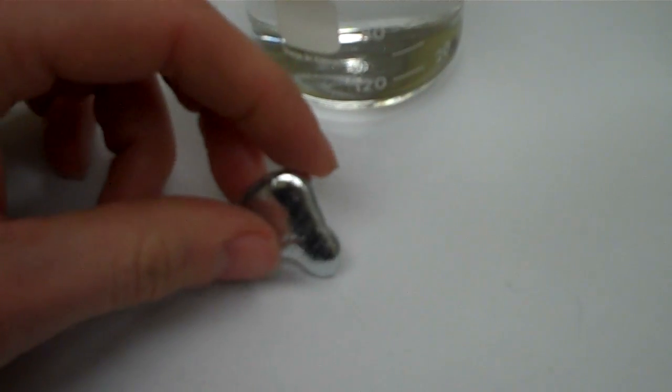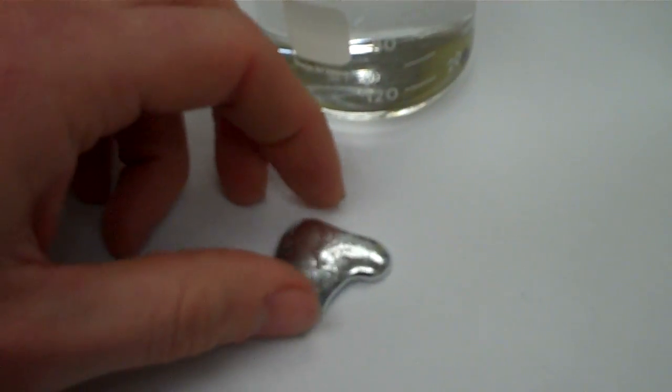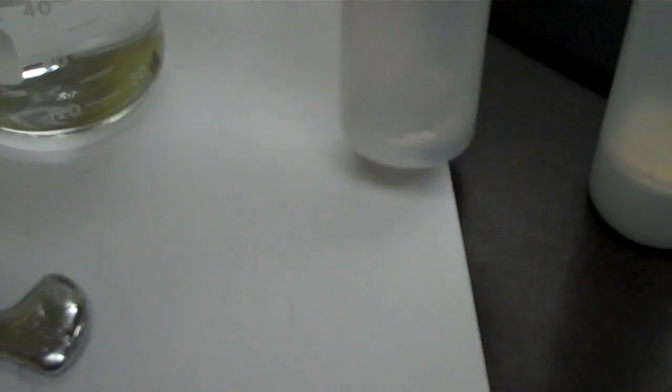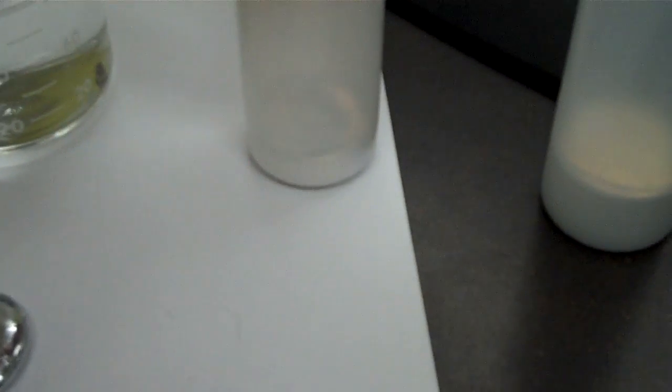All right, this is our gallium metal. This is approximately 10 grams to give you a rough idea of what it looks like. That is about 50 grams there and that's about 100 grams.